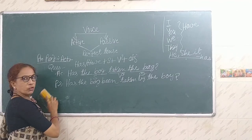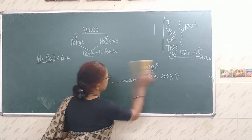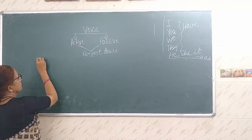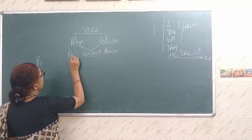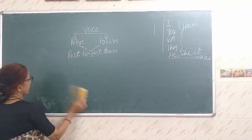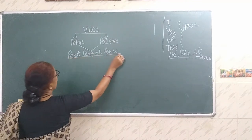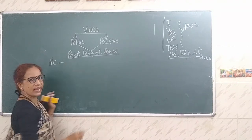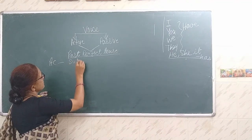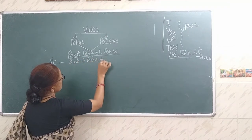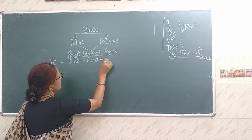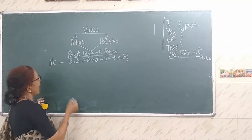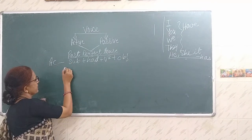Now let us move to past tense — past perfect tense. In past perfect tense, we are doing active sentence. The structure is the same as present perfect, but has and have become 'had'. So: subject plus had plus V3 plus the object. This is the active sentence structure for past perfect tense.